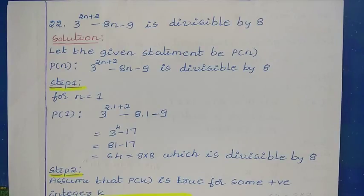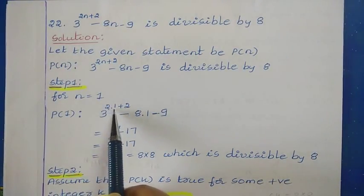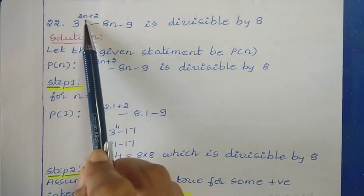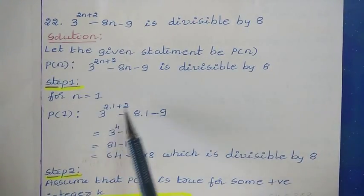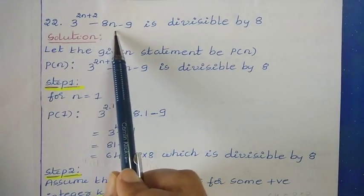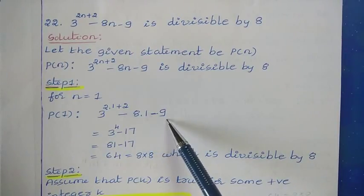The first step is proving or checking the statement for n equals 1. To check that, wherever you have n, replace that with the value 1. So here we have P of 1: 3 to the power 2 into 1 plus 2, minus 8 into 1, minus 9.